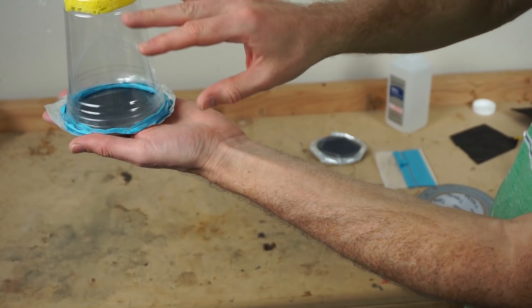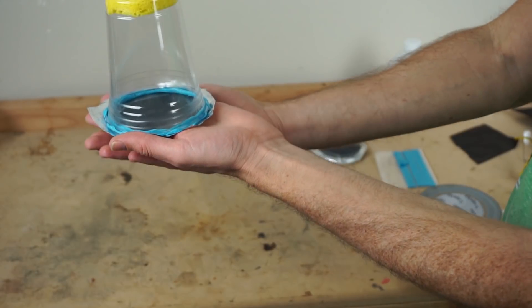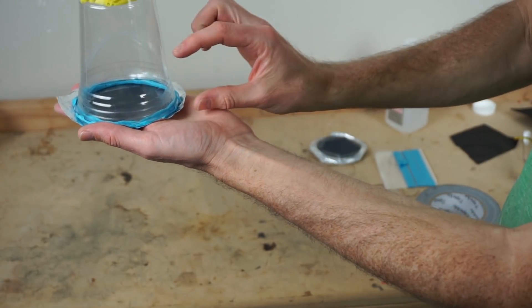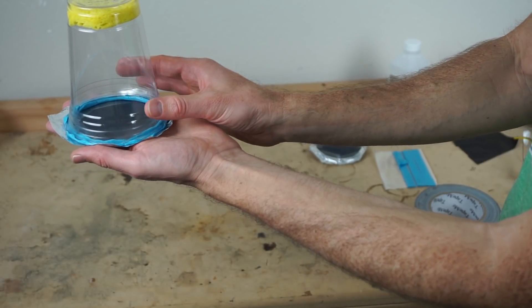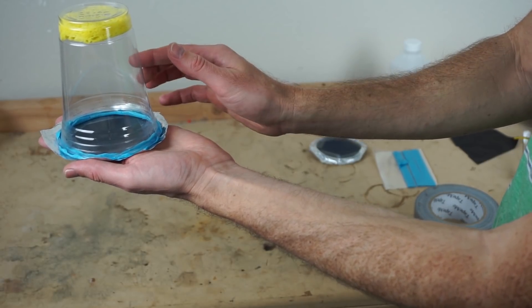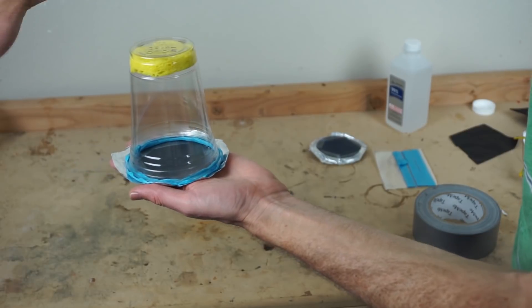How it works is you have rubbing alcohol vapor in here, and then I'm going to set it on dry ice and it'll make the bottom layer become super saturated. When the super saturated alcohol vapor gets hit by a radioactive particle, you'll see a streak go across it.